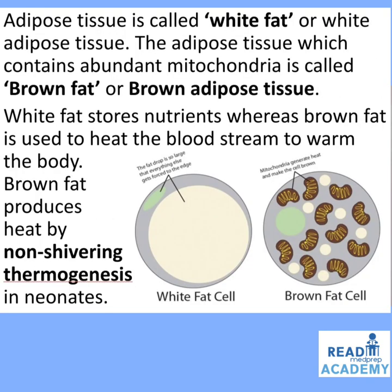Adipose tissue is called white fat or white adipose tissue. The adipose tissue containing abundant mitochondria is called brown fat or brown adipose tissue. White fat stores nutrients, whereas brown fat is used to heat the bloodstream to warm the body. Brown fat produces heat by non-shivering thermogenesis in neonates. In the image you can see the white fat cell and the brown fat cell, which is made up of a large number of mitochondria.